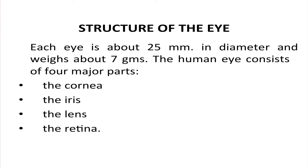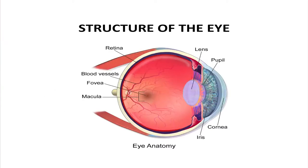Let us talk about the structure of the eye. Each eye is about 25 mm in diameter and weighs about 7 grams. The human eye consists of four major parts: the cornea, the iris, the lens, and the retina.